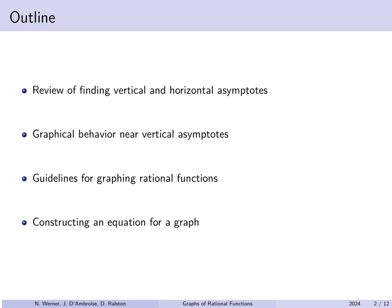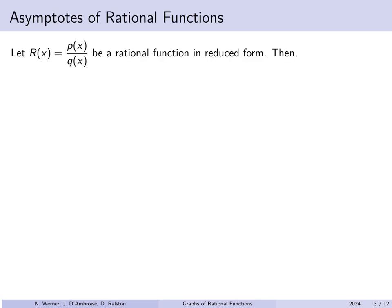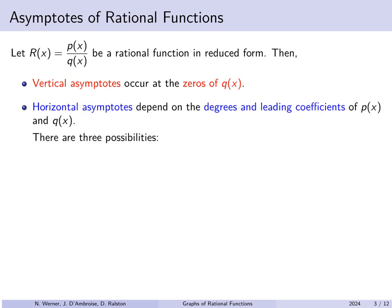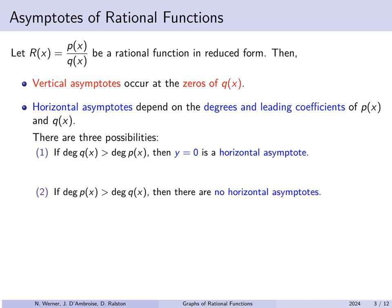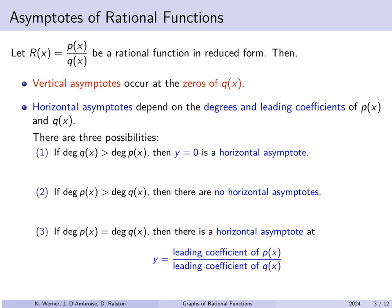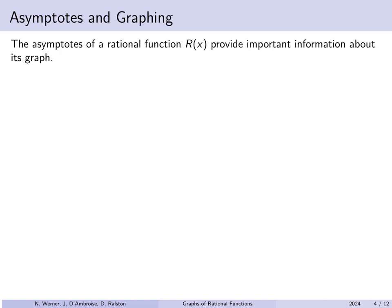If r of x is given as p of x over q of x, a rational function in reduced form — meaning any shared factors between p of x and q of x have already been cancelled out — then vertical asymptotes occur exactly at the zeros of q of x. Horizontal asymptotes depend on the degrees and leading coefficients of p and q. If the degree of the denominator is larger, y equals 0 is a horizontal asymptote. If the numerator has larger degree, there are no horizontal asymptotes. If they have equal degree, the horizontal asymptote is y equals the ratio of the leading coefficients.